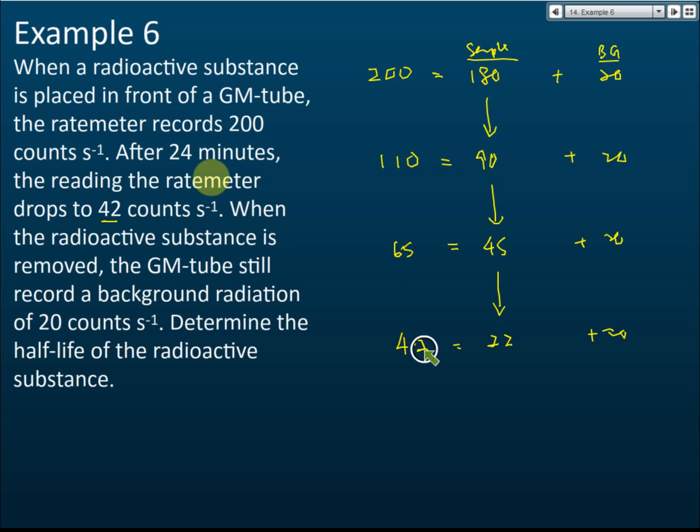And the 3 half-lives equals 24 minutes. So 3 half-lives equals 24 minutes, therefore one half-life equals 8 minutes.